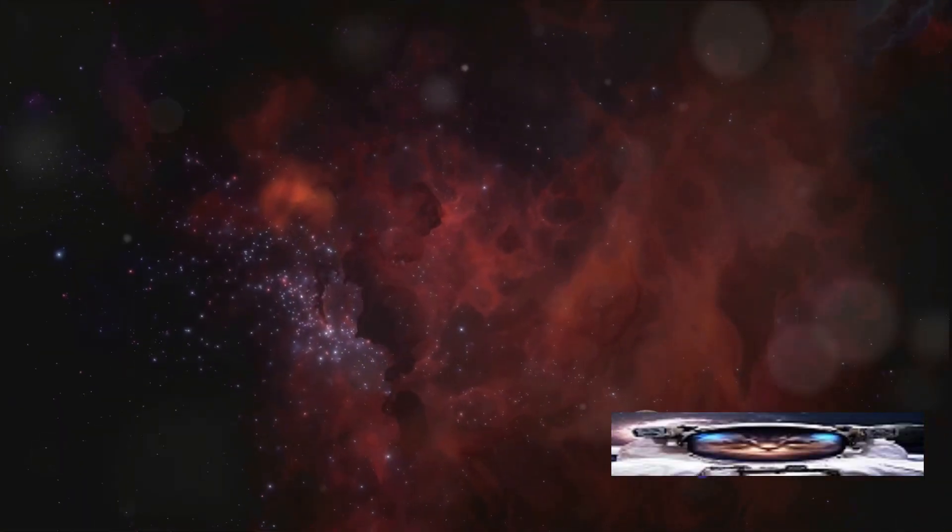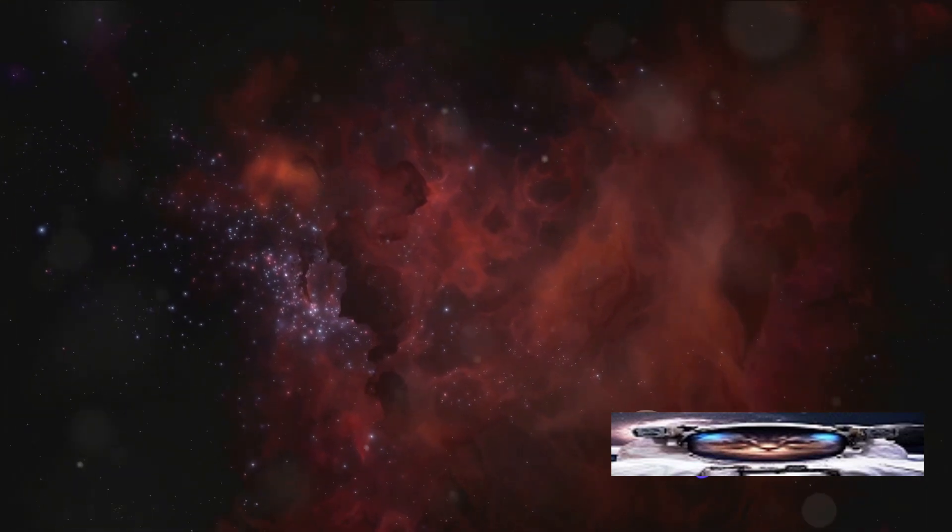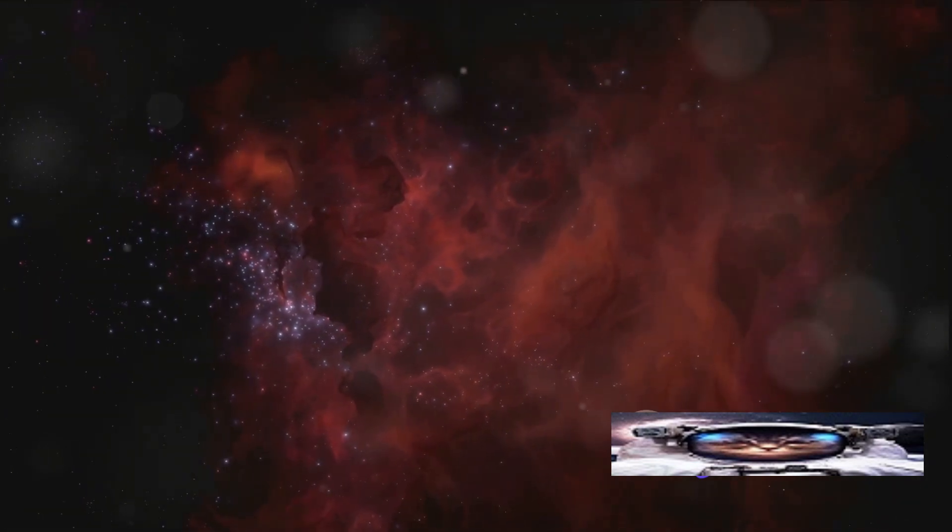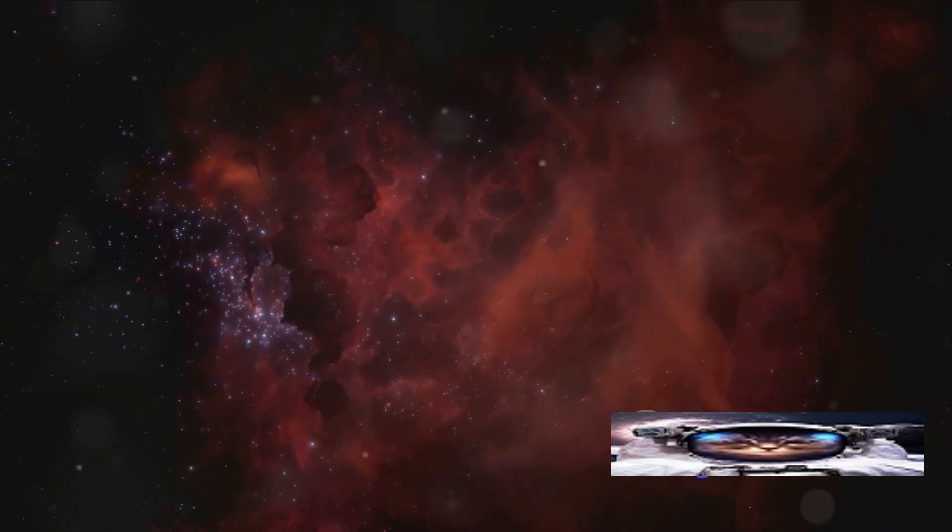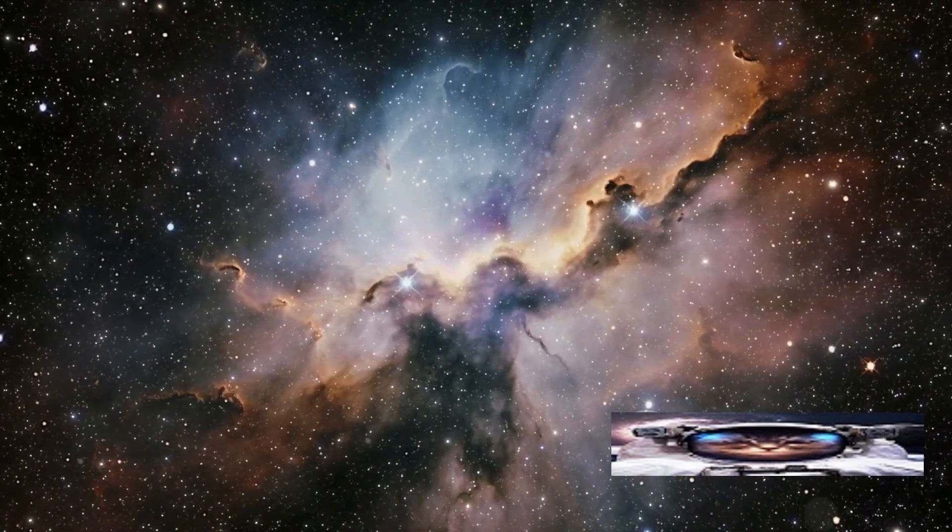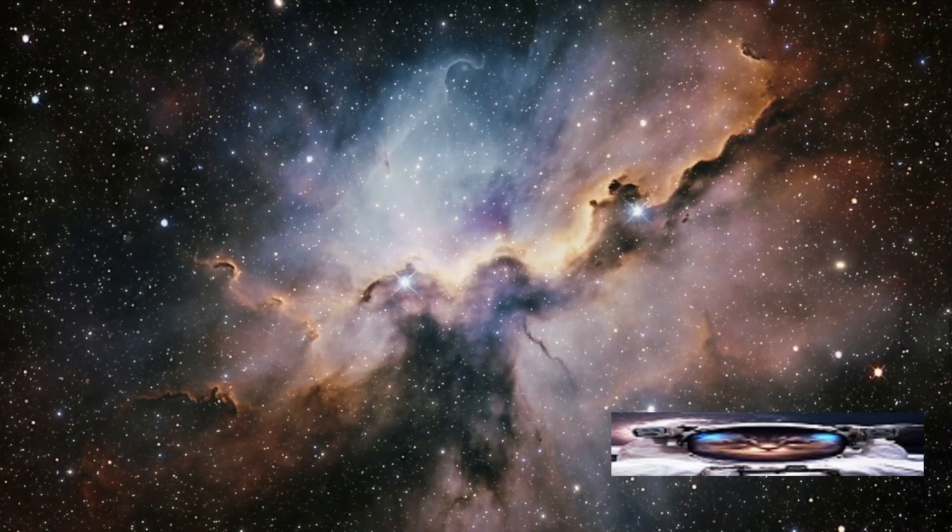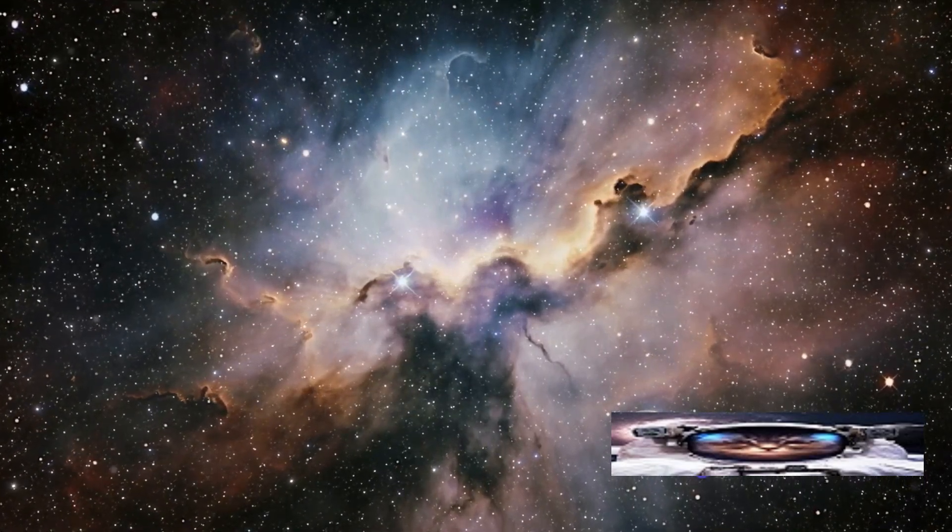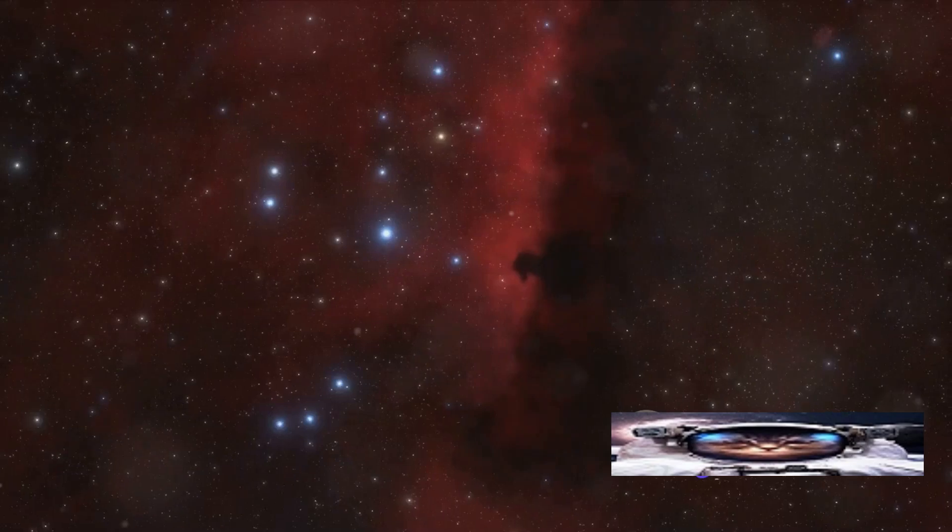There are several types of nebulae, each with their unique characteristics. Emission nebulae, for instance, are self-luminous, emitting their own light. The famous Orion Nebula is an example of this. Reflection nebulae, on the other hand, do not emit light. Instead, they reflect the light of nearby stars.